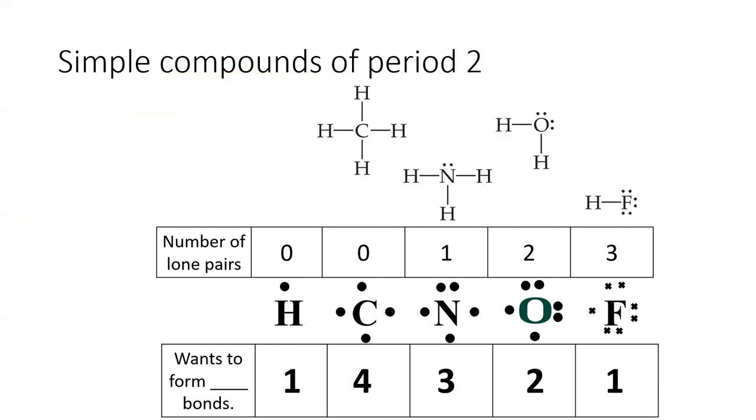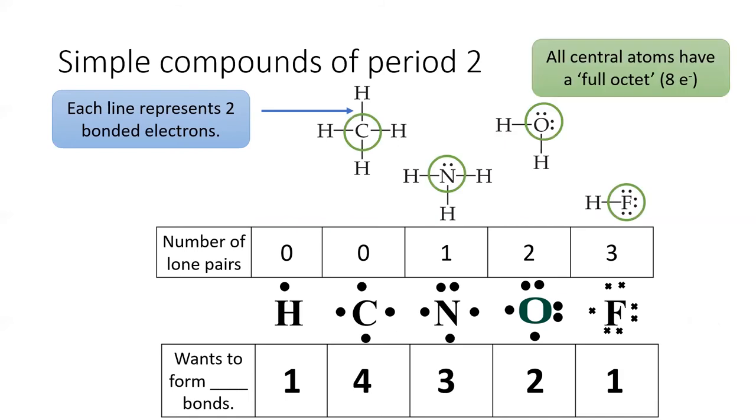Looking at the Lewis structures for the four simplest compounds of each of the period two nonmetals, we see that they each form the expected number of bonds. Remember, each line represents two electrons forming a covalent bond. If we count the total number of bonding and non-bonding electrons around each central atom, we will see that we've satisfied the octet rule.